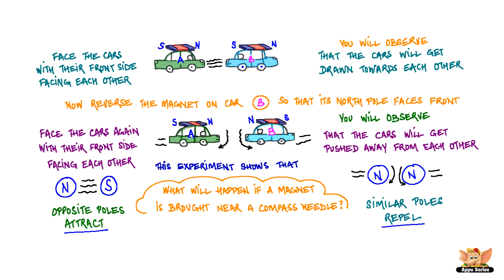What do you think will happen if a magnet is brought near a compass needle? The compass needle will be drawn towards the magnet. Take the compass away from the magnet and the needle will again indicate North and South.